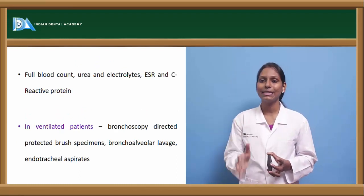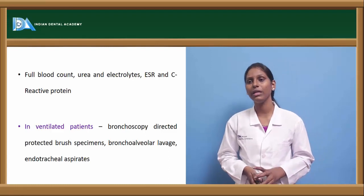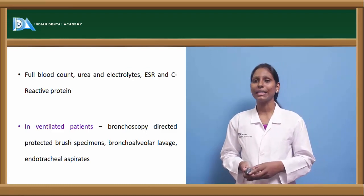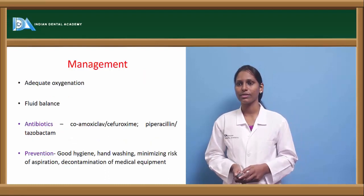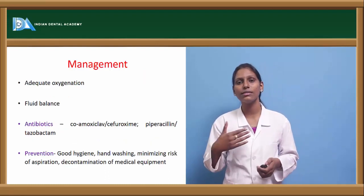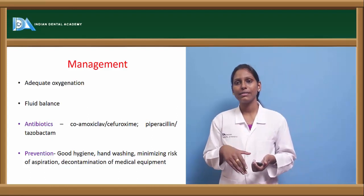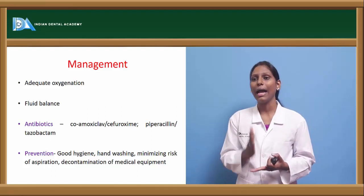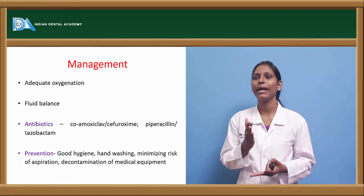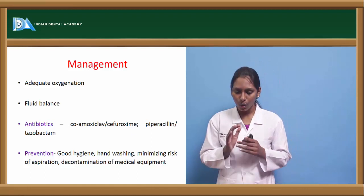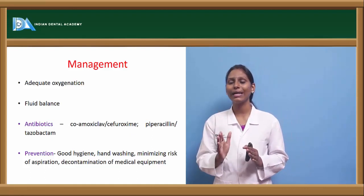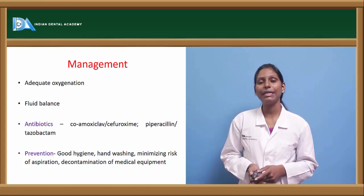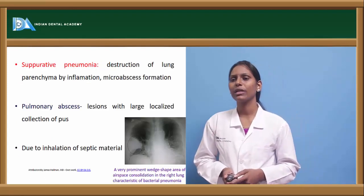Investigations include full blood count, urea, electrolytes, ESR, and C-reactive protein. In ventilated patients, bronchoscopy-directed protected brush specimens, bronchoalveolar lavage, and endotracheal aspirates are helpful in diagnosis. Management involves adequate oxygenation, external oxygen supplementation, and fluid balance maintenance. Antibiotics such as co-amoxiclav, cefuroxime, and piperacillin-tazobactam can be given. Prevention includes good hygiene, hand washing, monitoring risk of aspiration, and decontamination of medical equipment.